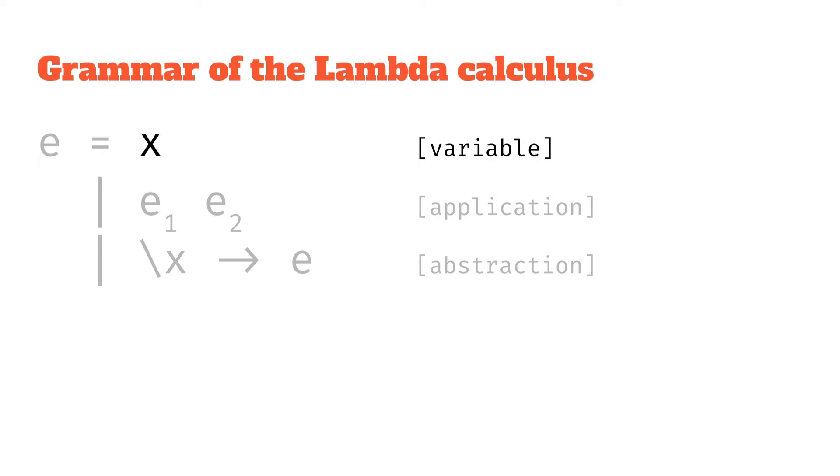So you could say, well, x on its own is a valid lambda expression. Or, and that's what this pipe means, this or.